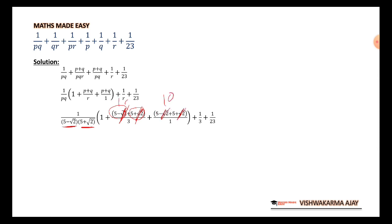5 plus 5 is 10, and this is a minus b, a plus b, which can be written as a square minus b square, which can be written as 5 square minus root 2 the whole square. 5 square is equal to 25 minus 2, that is 23.